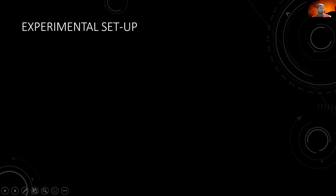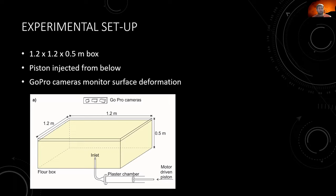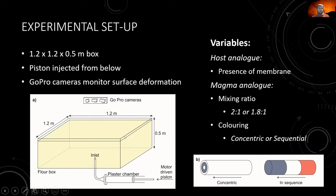The experiment setup uses a 1.2 by 1.2 by 0.5 meter box with a piston inserted below; the plaster is in a chamber below and injected at a constant rate. GoPro cameras monitor the surface. Variables include inserting a membrane at various depths within the tank and changing the mixing ratio of the plaster for lower or higher viscosity fluids. Concentric coloring allows observation of internal fabric development, while sequential coloring reveals the timescales of emplacement — which parts of the intrusion form at what time.